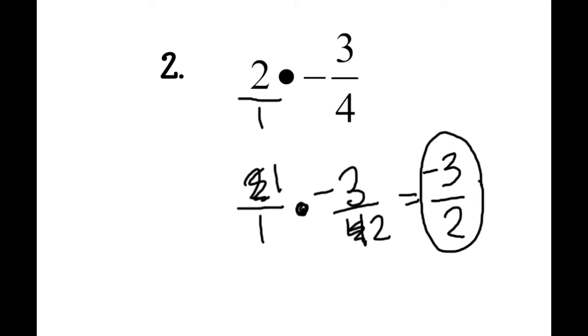You can also make this a mixed number. 2 goes into 3 one time with 1 left over, so it would be negative 1 and a half, but I am totally okay with just leaving it as an improper number.